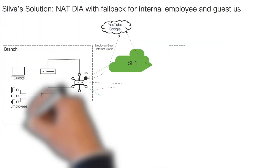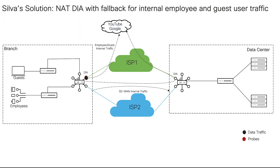Now let's see how NAT DIA helps Silver complete his tasks. In this use case, branch employees are allowed direct access to the internet for cloud-based applications and user web access. DIA is achieved by configuring the managed routers as an internet exit point. Designated employee internet traffic uses the directly connected internet transport for direct internet access. The rest of the internal traffic is forwarded via the SD-WAN overlay using any available transport tunnel to the destination. Remote site guest users access the internet directly for user web access and cloud-based applications without routing the traffic via the internal network and through the central site.